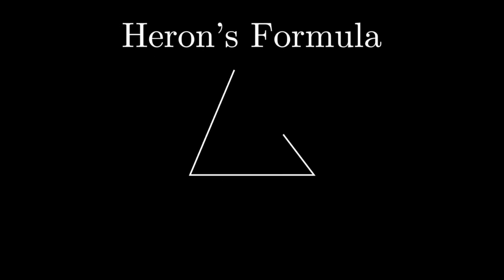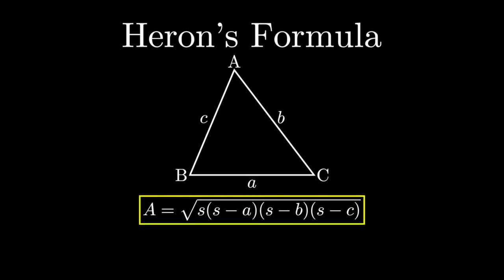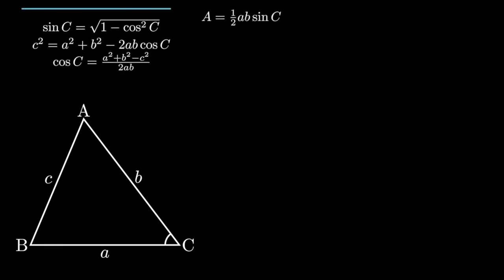Heron's formula uses the three side lengths of a triangle to find its area. The formula is given by the square root of s times s minus a times s minus b times s minus c, where s is the semi-perimeter of the triangle, or a plus b plus c all over 2. The traditional Heron's proof is more complicated. It uses the formula one-half ab sine c and gradually substitutes in the side lengths for the unknown variables.